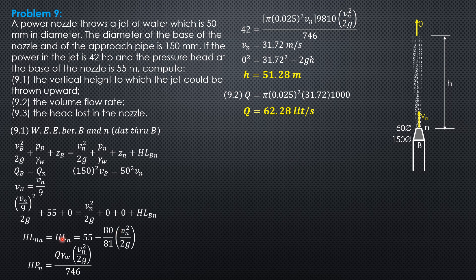And finally the head loss in the nozzle we already established the equation. So head loss in the nozzle 55 minus 80 over 81 times 31.72 squared over 19.62 velocity head in the nozzle. So the head loss in the nozzle is equal to 4.351 meters.